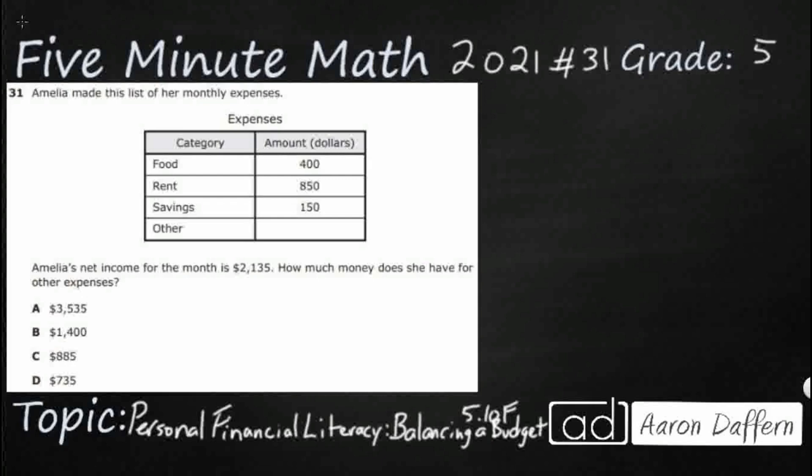So Amelia is making a list of her monthly expenses right here. We've got food, we've got rent, we've got savings, and we've got this mystery amount, this other.